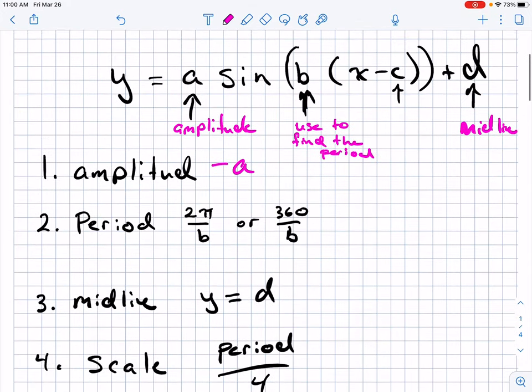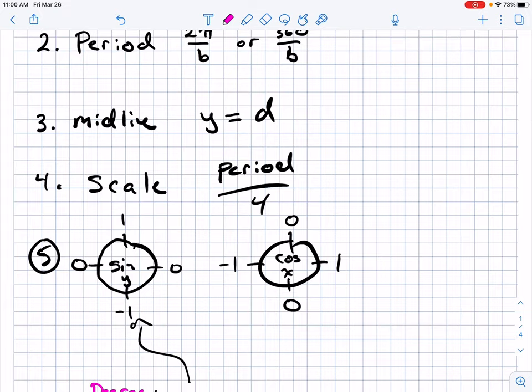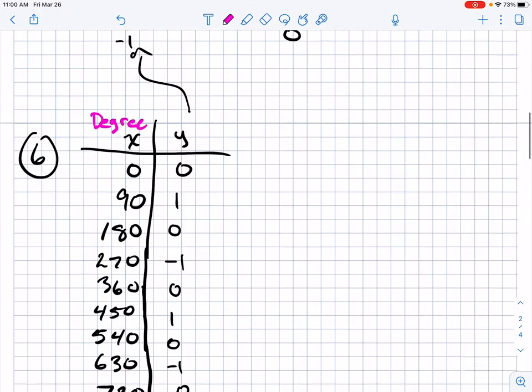And those are the six steps for graphing sine and cosine. So 1 again is amplitude, 2 is period, 3 midline, 4 is scale, 5 is use the circle to make 6 the table.